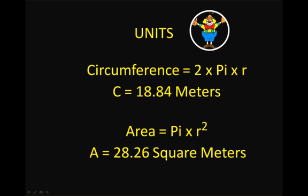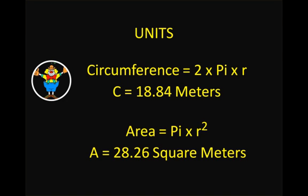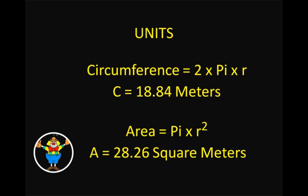If we take a look at our units: the circumference is really just a line — if we took that edge and stretched it out, it would just be a line. So the units for circumference are single units: meters, feet, inches, or whatever we're measuring. But for area, we're squaring r, so our units will be squared — square meters, square inches, square feet, or whatever units we're working with.